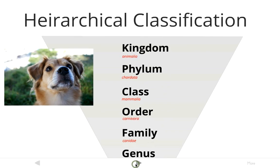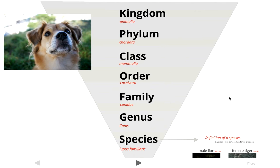In this system we have seven different groups. The biggest and most general group is a kingdom. From there we go down to phylum, which is a little more specific, then to class, then to order, then to family, then to genus, and then to species — which is the most specific group. Kingdom includes the largest number of organisms; species includes the fewest.